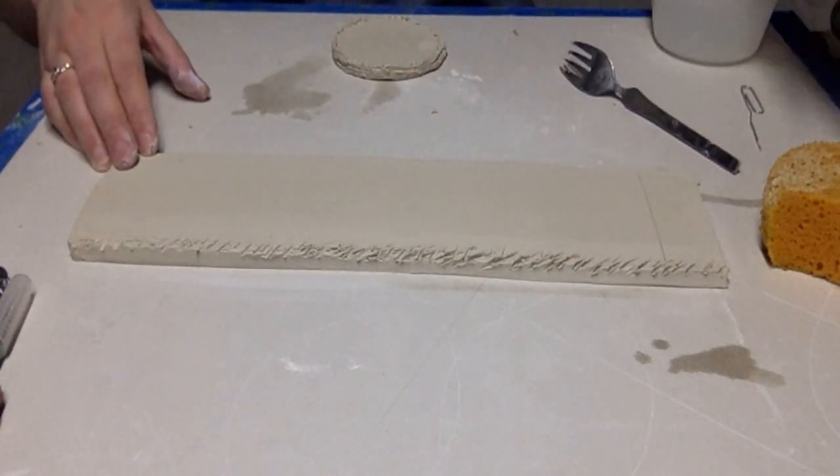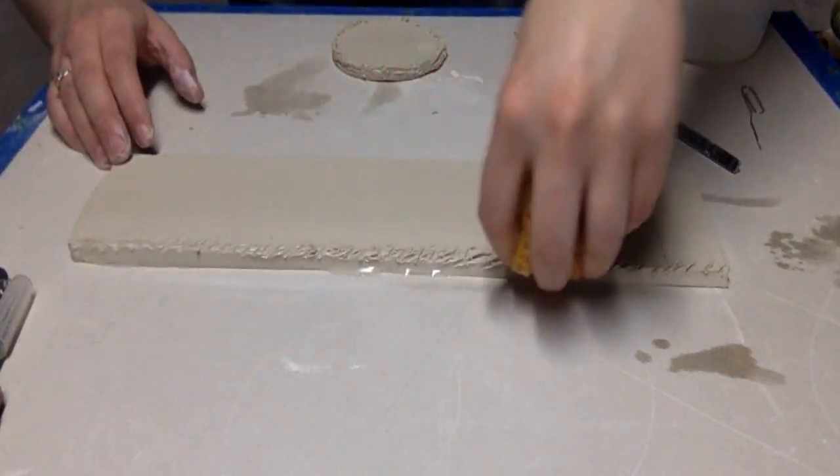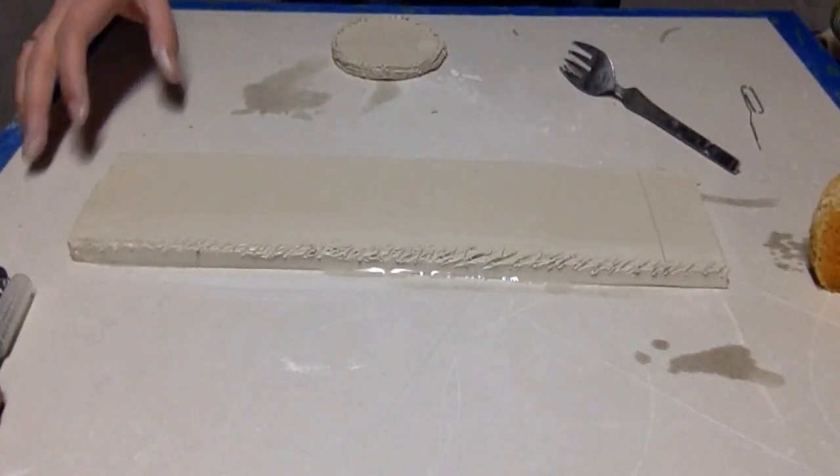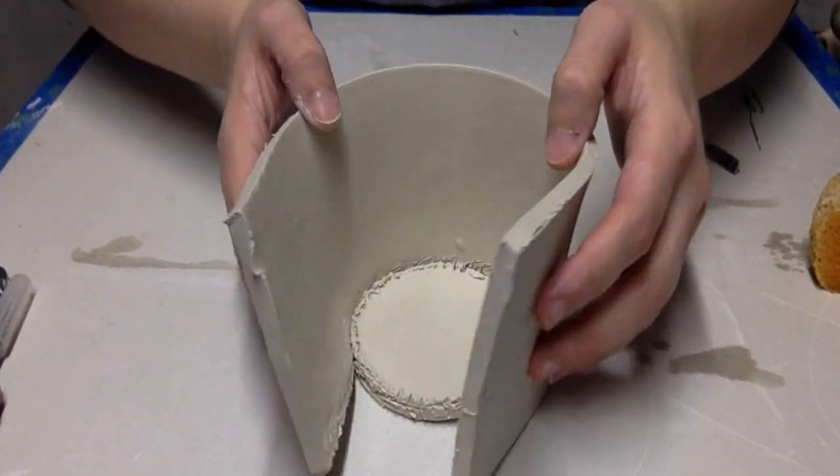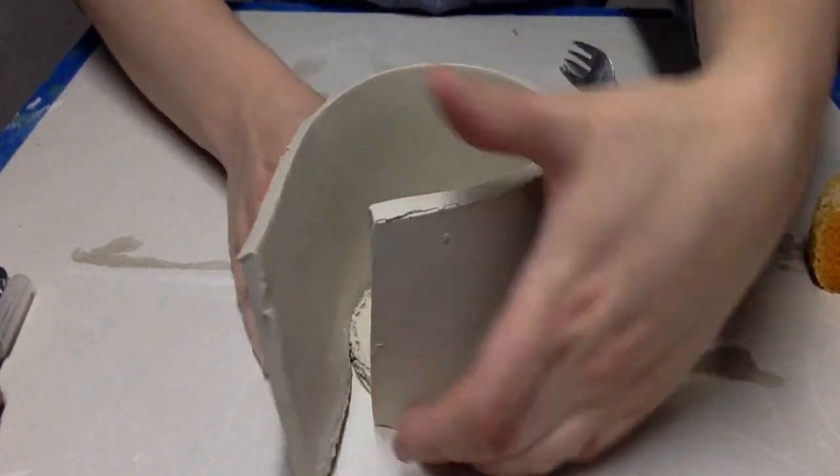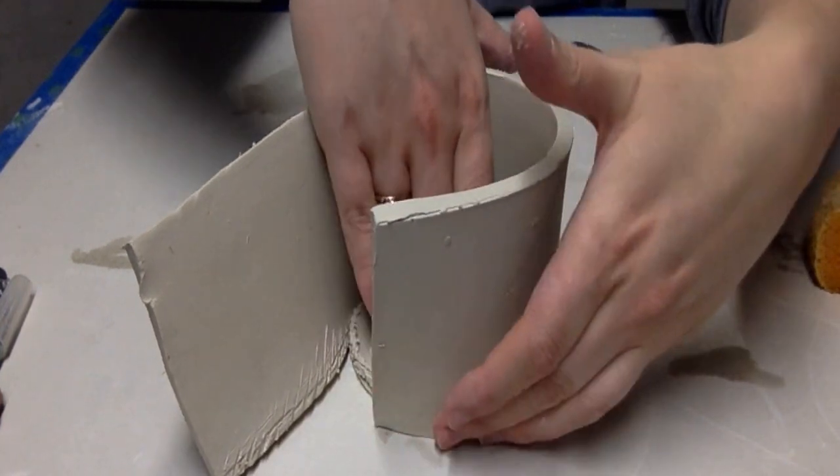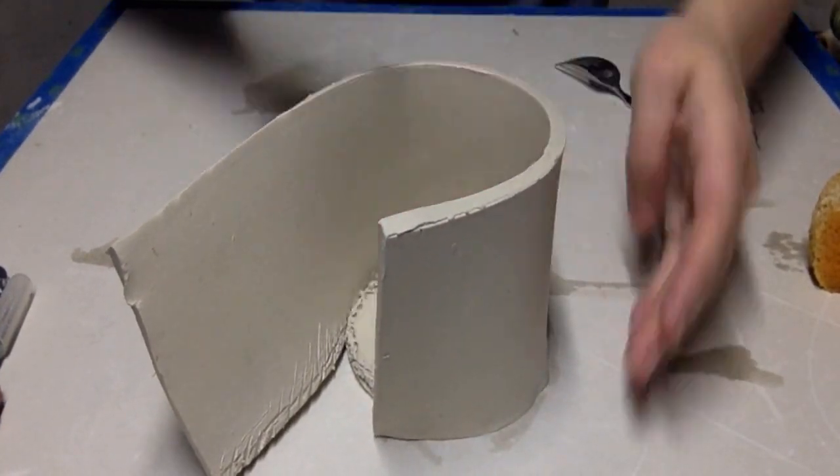I add additional water just to create more of that slip that will then help it stick together. Then I put the bottom and the side slabs together and really compress them to each other so that they are firmly stuck together.